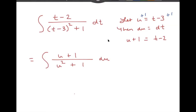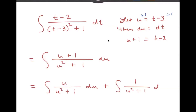We separate that into two integrals: the first is u over u squared plus 1 du, and the second is 1 over u squared plus 1 du. The second integral is what we just learned in this section — it gives inverse tangent of u. The first integral will require another substitution.